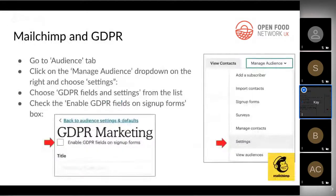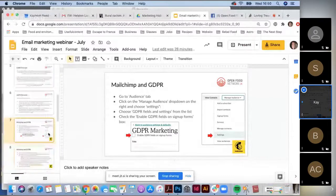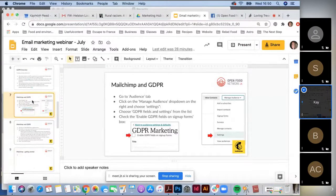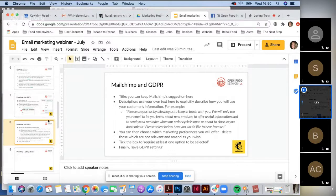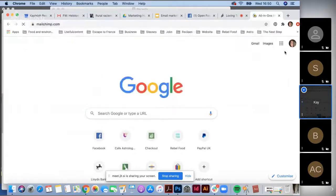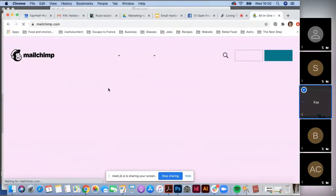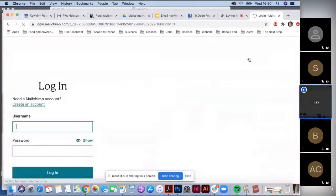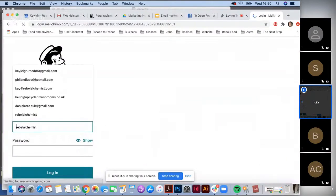I'm now going to move on to walk through how to set up a really useful tool on Mailchimp — how to make sure your sign-up pages are GDPR compliant. I'm going to leave these slides here for you to check on later, with step-by-step instructions on this page. I'm going to walk through it on the computer. If I click on Mailchimp and log in — I'm going to log in with one I made earlier.